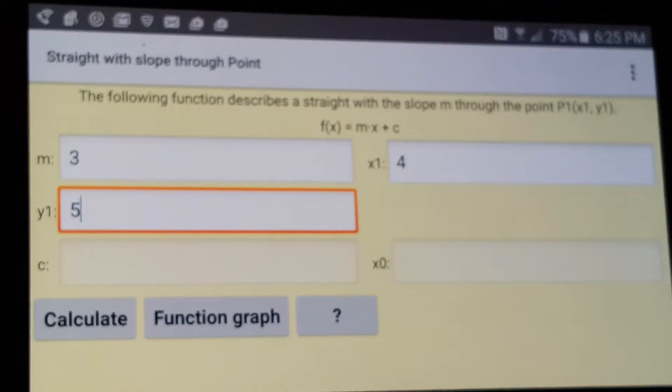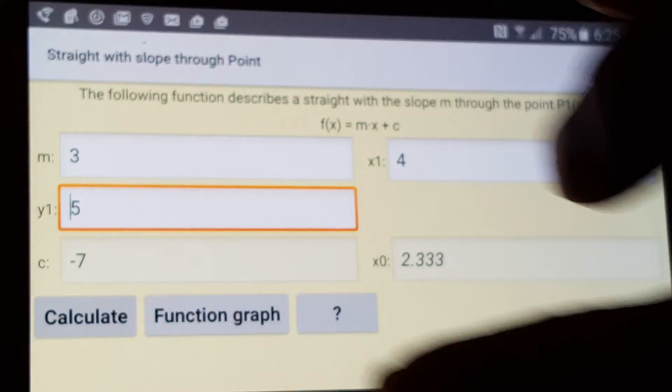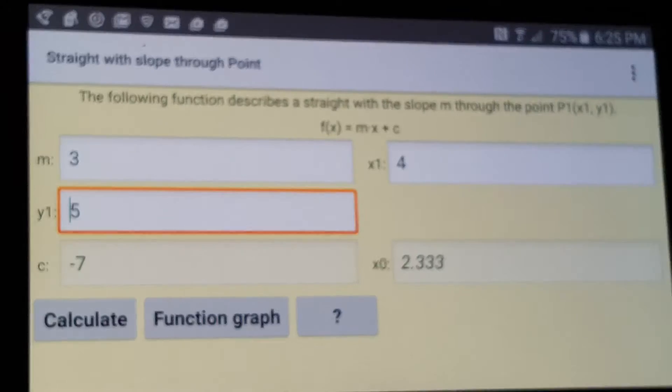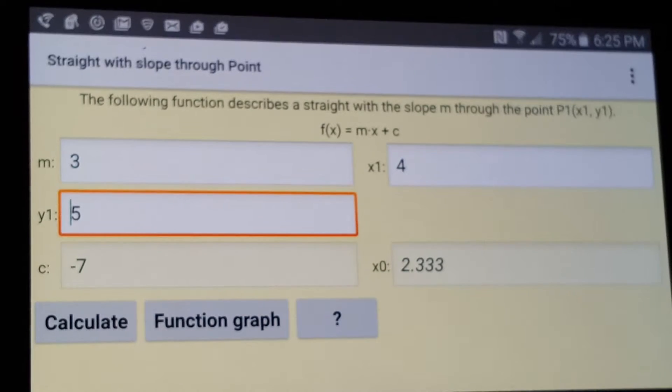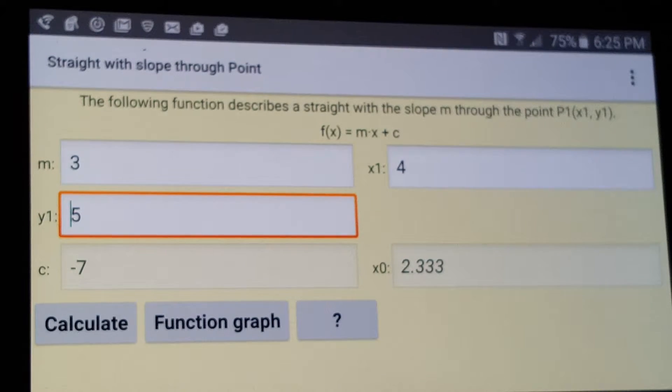Now I'll press the Calculate button. And when I press the Calculate button for c, I get negative 7. And for x0, I get 2.333.